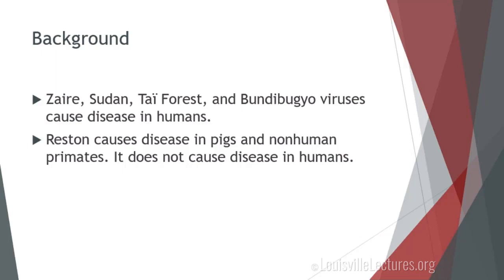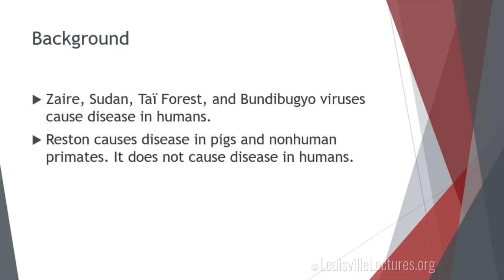The Zaire, Sudan, Tai Forest, and Bundibugyo viruses cause disease in human beings, whereas the Reston virus only causes disease in pigs and non-human primates. There is no human disease from the Reston species.